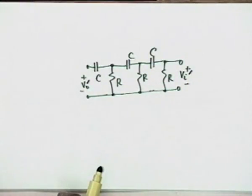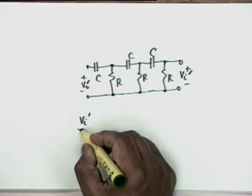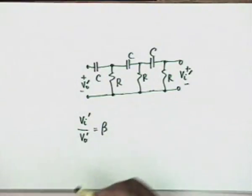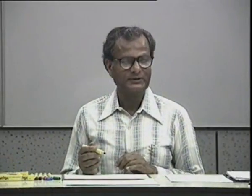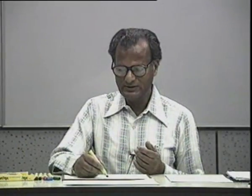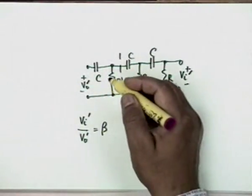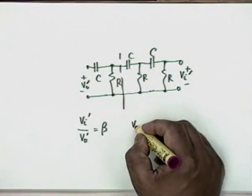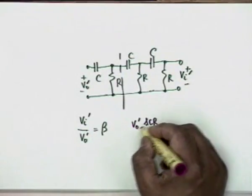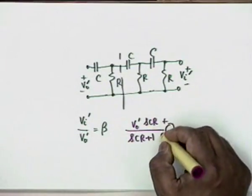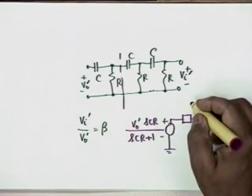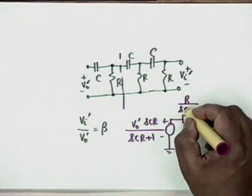We need to find the transfer function V_I′/V₀′ for this passive network — this is β. We need to find the condition under which β has a phase shift of 180°. The analysis can be done by various techniques; using Thevenin's theorem is simplest and avoids the need for loop or node equations with 3×3 matrix inversion. Applying Thevenin's theorem gives V₀′ · SCR/(SCR + 1) as the voltage source, with impedance R/(SCR + 1) in series with the next C and R.